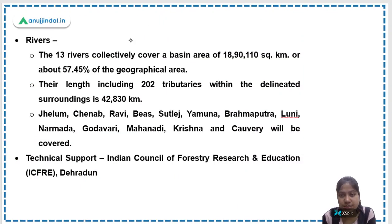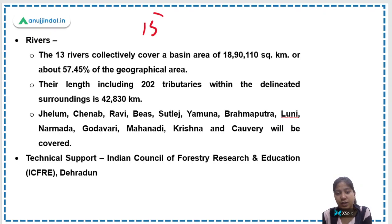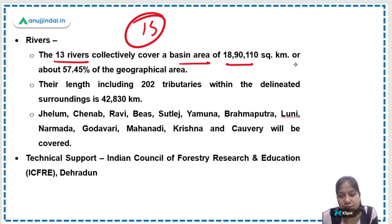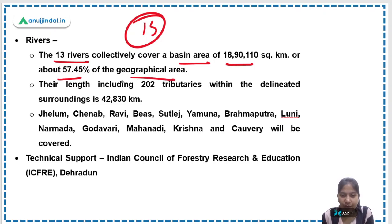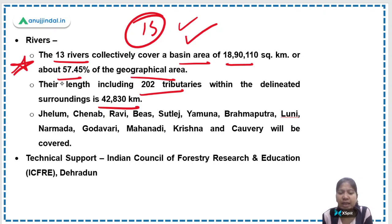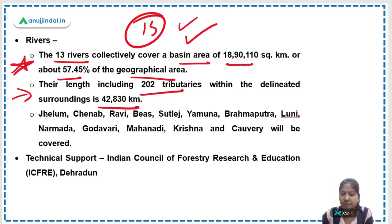Which rivers are covered under this plan? These 13 rivers collectively cover a basin area of 18,19,110 square kilometers, which is 47.45% of the geographical area of India. The total length including 202 tributaries of these 13 major rivers is approximately 42,830 kilometers.